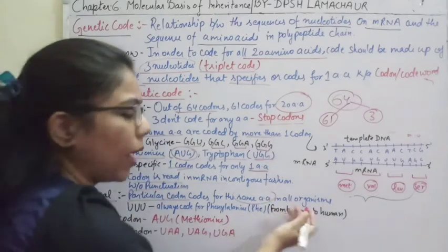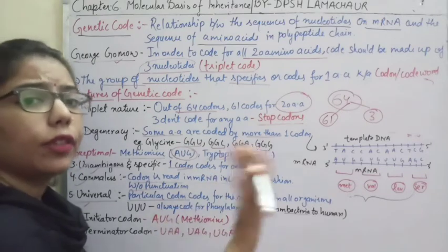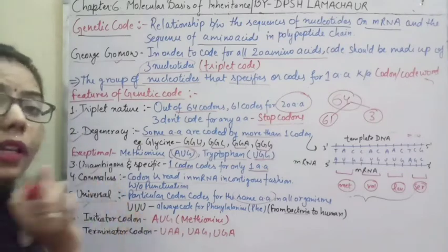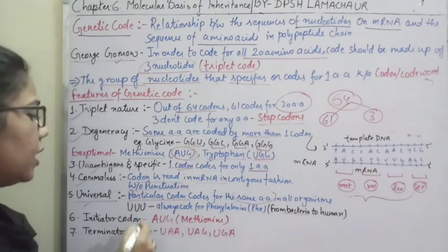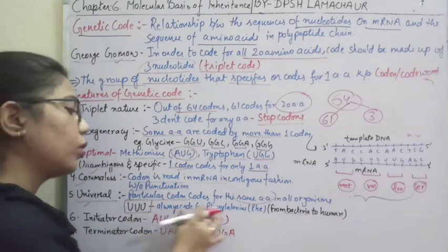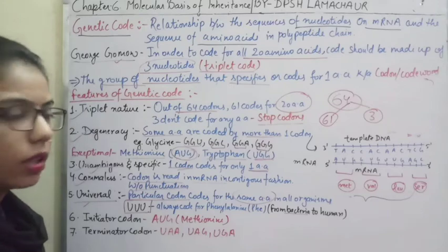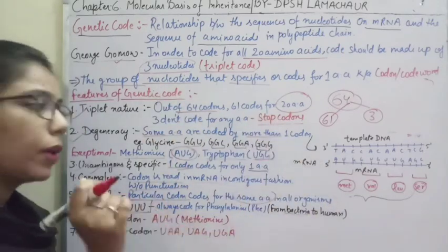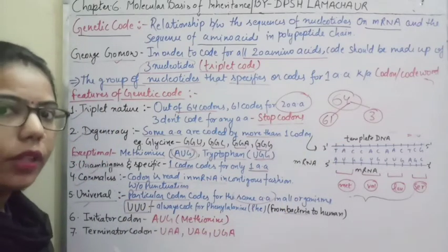Whether it is bacteria, which is unicellular, or a multicellular animal, or humans — in all of them, a particular codon will code for the same particular amino acid. This is universality. UUU, for example, will always code for phenylalanine in any living organism.